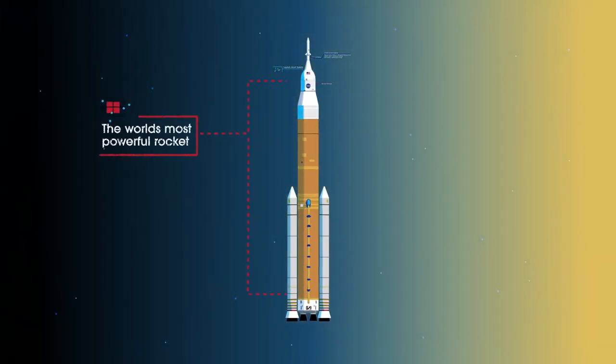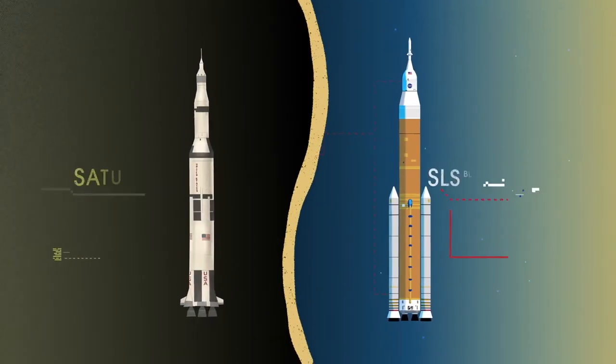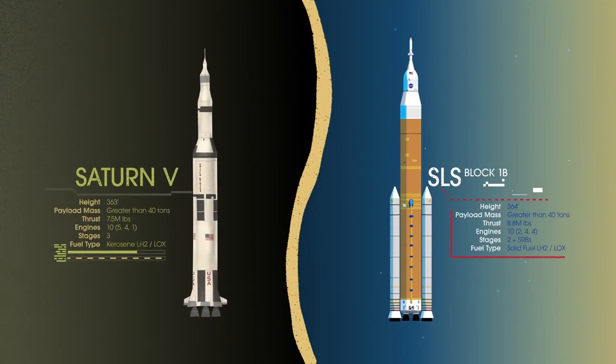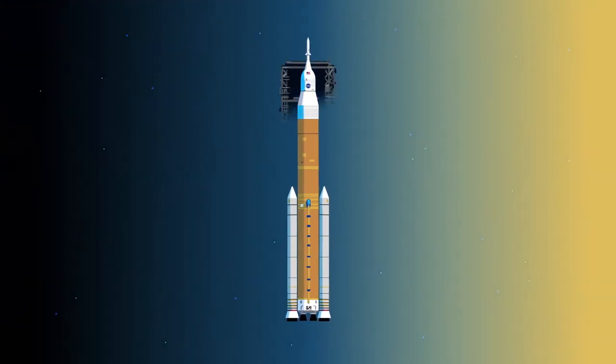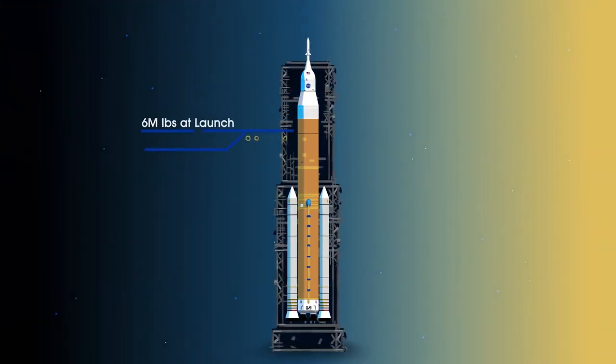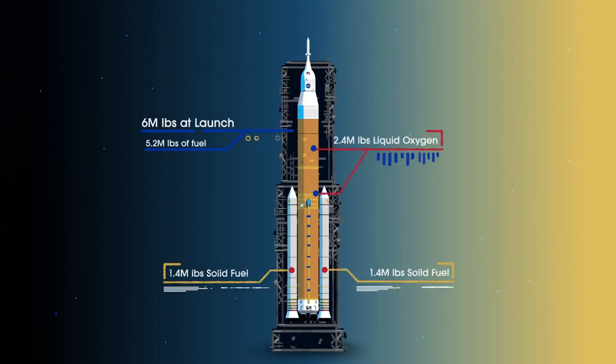Altogether, this is the world's most powerful rocket, and it exceeds the legendary Saturn V of the Apollo era in numerous ways. Sitting on the launch pad, the entire rocket, fully fueled, weighs just over 6 million pounds, 5.2 million of which is just the fuel.